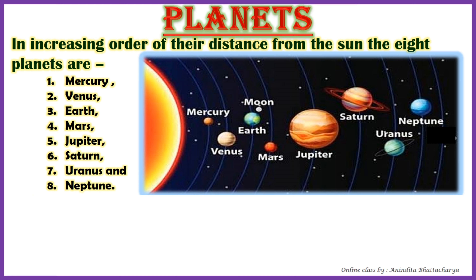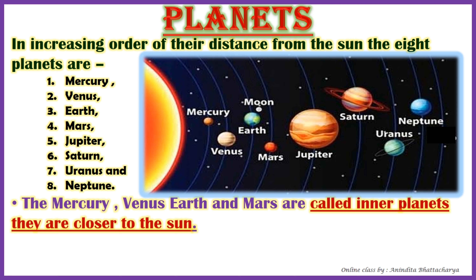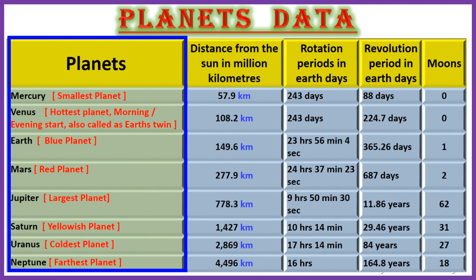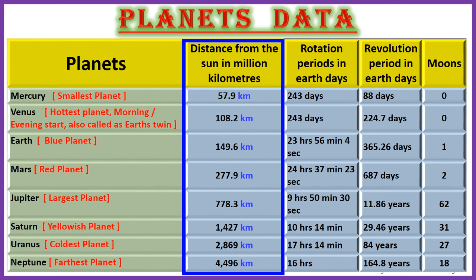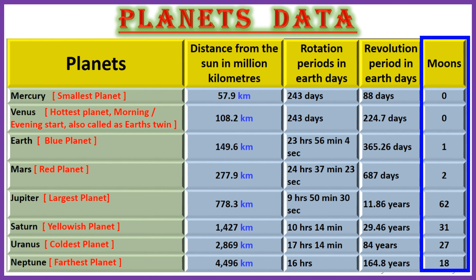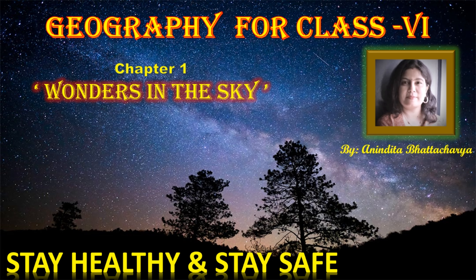The eight planets in increasing order of distance from the Sun are: Mercury, Venus, Earth, Mars, Jupiter, Saturn, Uranus, and Neptune. Mercury, Venus, Earth, and Mars are called inner planets because they are closer to the Sun. Jupiter, Saturn, Uranus, and Neptune are called outer planets. Please look at the data table which shows planet names, distance from the Sun in kilometers, rotation period, revolution period, and number of moons — please memorize this chart as it is very important. That's the end of today's session. We'll meet in the next class with new topics. Bye, take care, and happy learning!